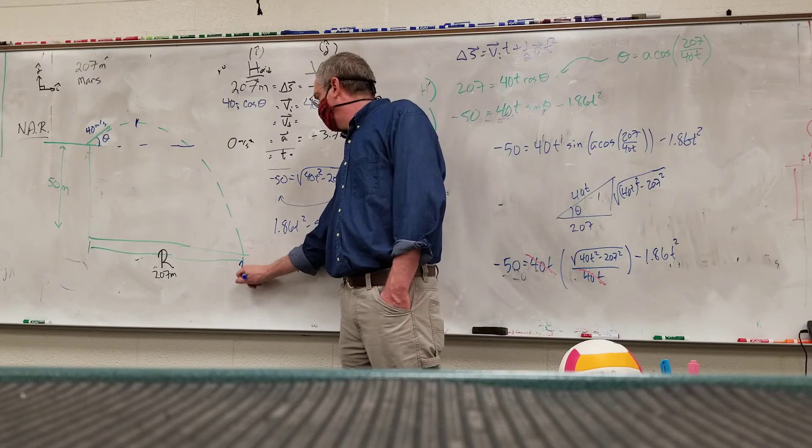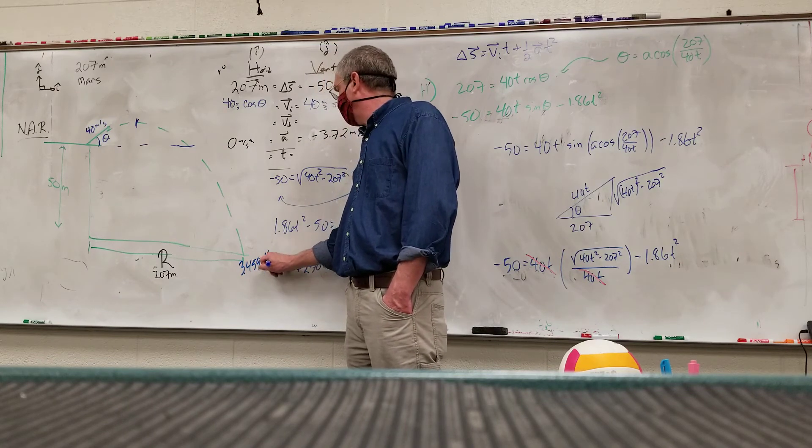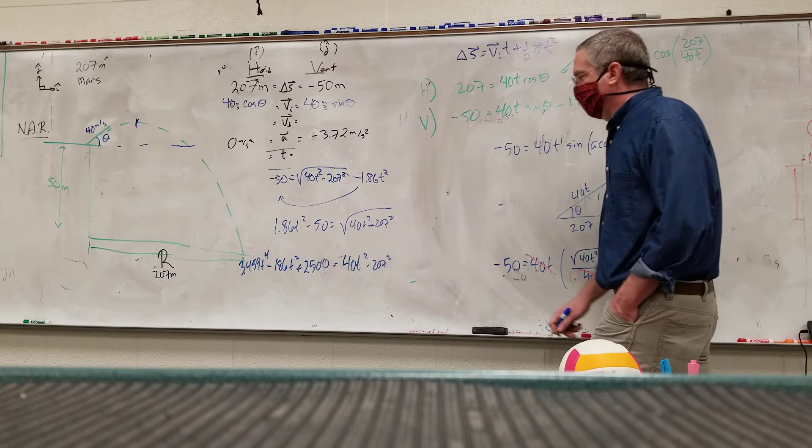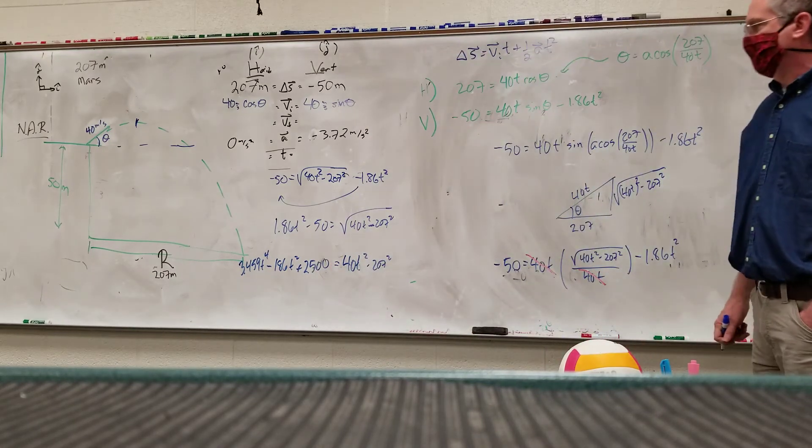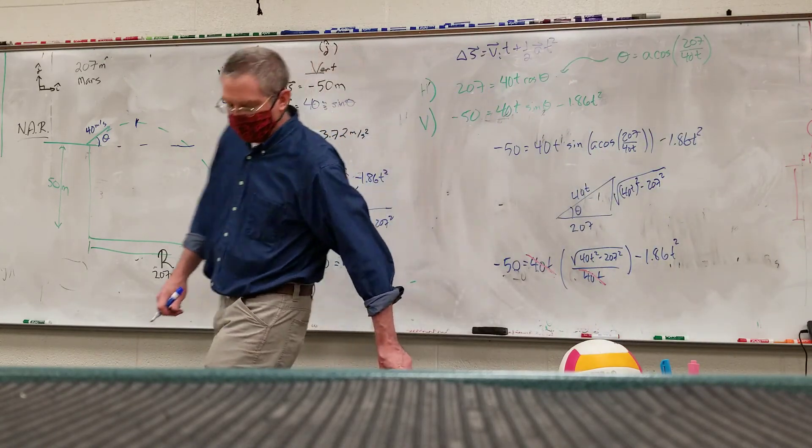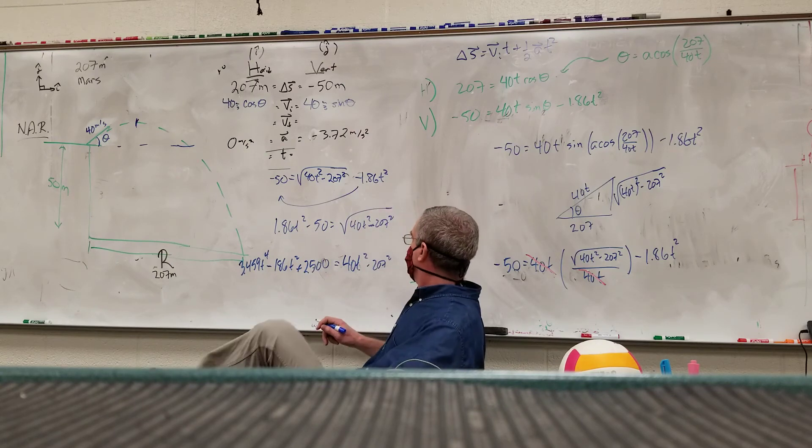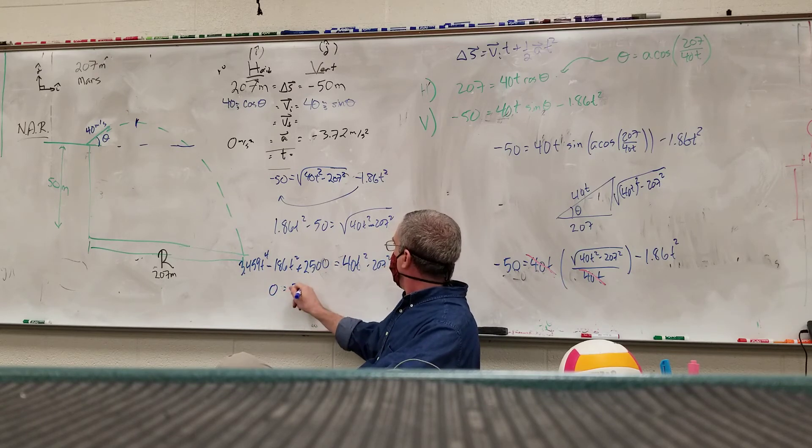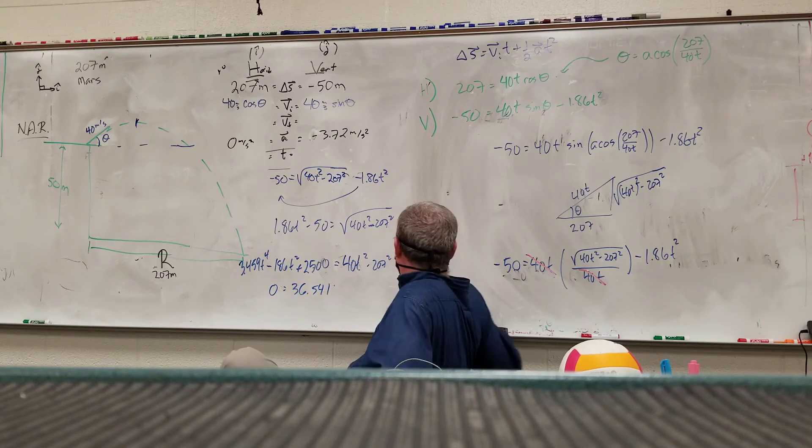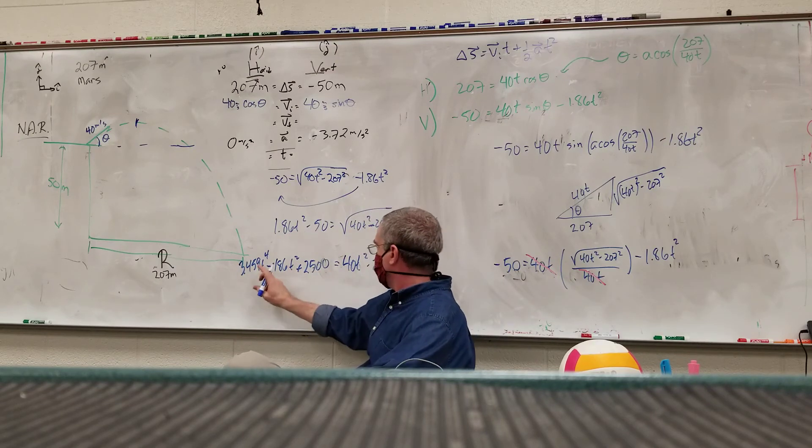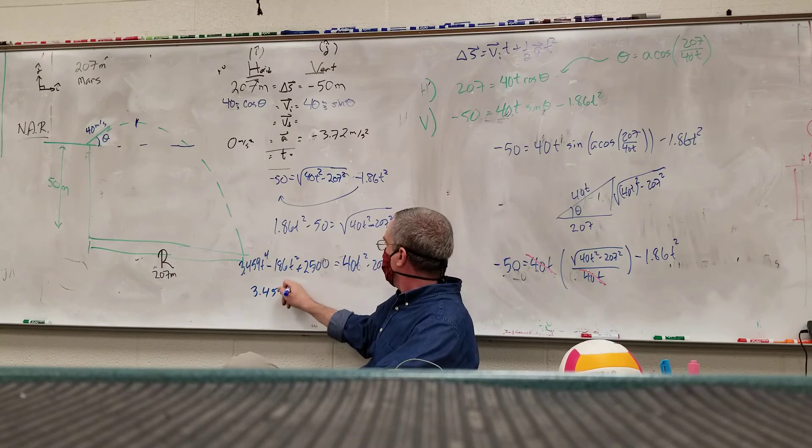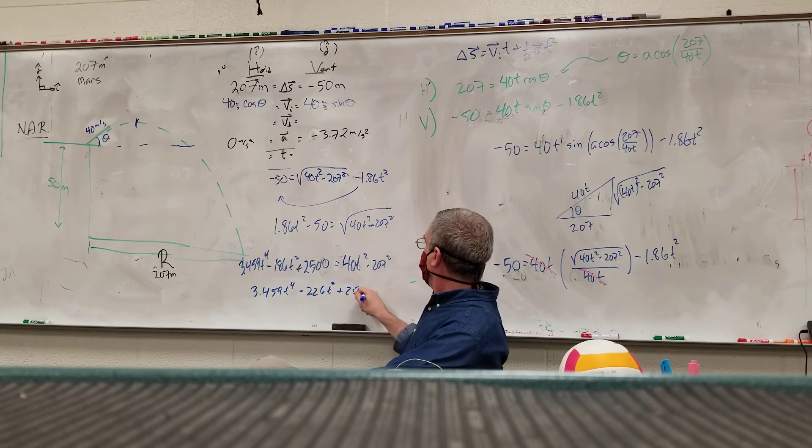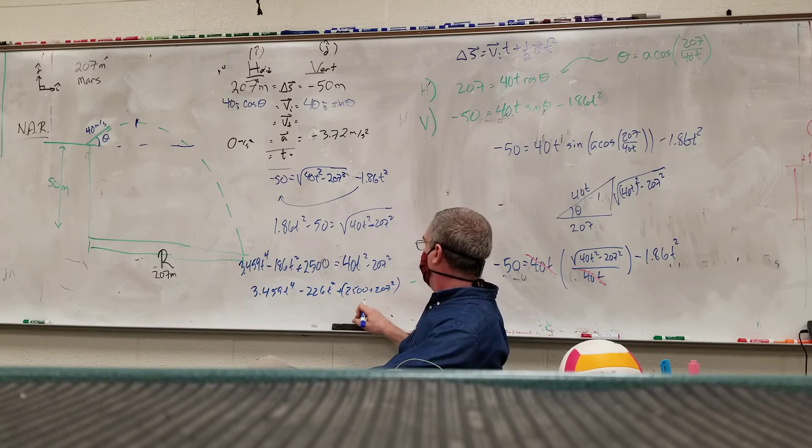3.459t to the fourth power minus, and then 50 times 1.89, oh, 186t squared. Right now I'm thinking everyone is, in their mind is going, awesome. That was awesome. Thanks. Let's get everything over onto the right side, so 40 minus that, so this is 0 equals 36.541. Oh, no. Let's get everything over on the left side over here. So 3.459t to the fourth power minus 226t squared plus 2,500 plus 207 squared equals 0. Now what?